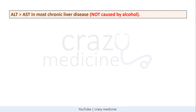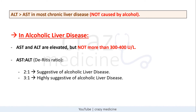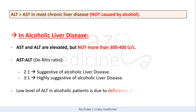Usually ALT rise is greater than AST rise in most chronic liver diseases not caused by alcohol. Alcoholic liver disease has a specific pattern: AST and ALT are elevated but usually never cross 300 to 400. The AST-to-ALT ratio, also known as the De Ritis ratio, is elevated — a ratio of 2:1 is suggestive of alcoholic liver disease, and a ratio of 3:1 is highly suggestive or almost diagnostic. This relatively low ALT in alcoholic liver disease is due to deficiency of pyridoxal phosphate.